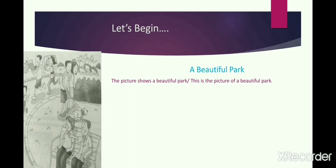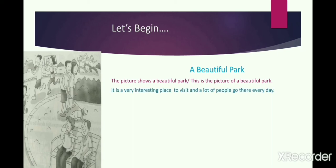When we are describing a picture in the picture composition, the first line I have written already remains the same: 'The picture shows a beautiful park,' or you can also write 'This is the picture of a beautiful park.' After that I have written: 'It is a very interesting place to visit and a lot of people go there every day.' This is a general statement which acts as my introduction to the picture. It is very important to write some inputs from your side — some general statements — as they will always get you extra marks. The teacher will think that the child has not just described the picture but has also used his own creativity. This will give you an extra edge over the others.